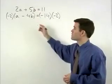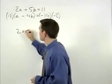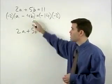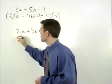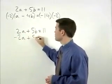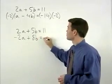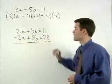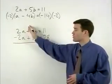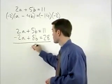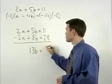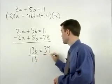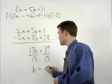Rewriting both equations, we have 2a plus 5b equals 11. And for our second equation, we have negative 2a plus 8b equals 28. Now when we add our two equations together, our a terms will cancel out. And we're left with 13b equals 39. Dividing both sides by 13, b equals 3.